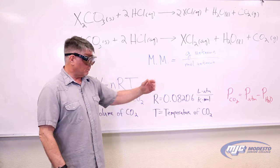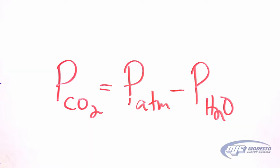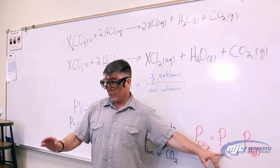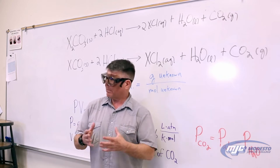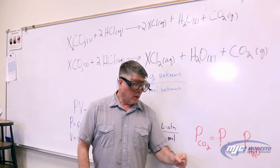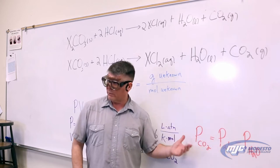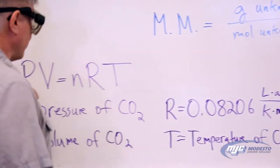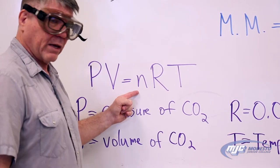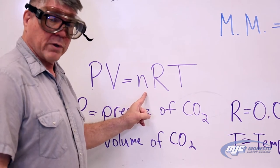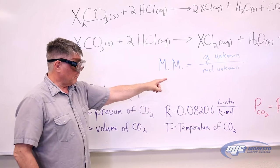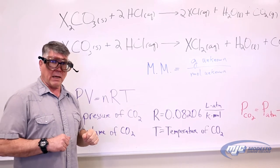We want just the pressure of the carbon dioxide gas for the ideal gas law. That's easy to get: the pressure of just the CO2 equals the atmospheric pressure — which we can measure — minus the vapor pressure of the water. Once we have the pressure, volume, and temperature of the gas, we rearrange PV = nRT and solve for n, the moles of gas. That gives us moles of CO2, which equals moles of our unknown — the denominator. Combined with the mass we measured, we have the molar mass.